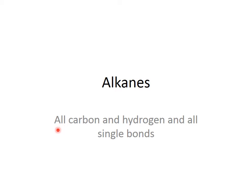The first thing we're going to do is look at alkanes. The alkanes are the carbon compounds that are all carbon and hydrogen with all single bonds. So in the stick models all you see are straight lines. In the condensed formulas you see carbons and hydrogens and no double bonds or triple bonds.